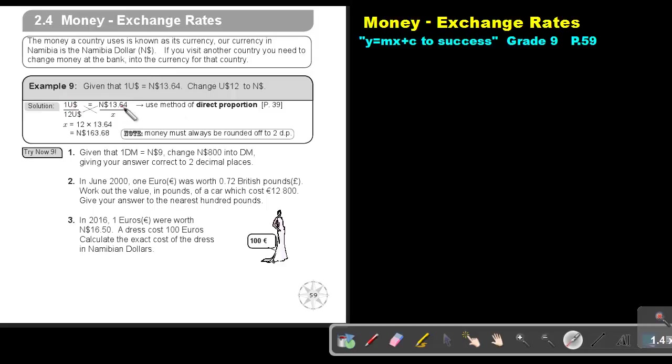So we start with the top: 1 US dollar equals 13.64 Namibian dollar. Then 12 US dollar equals X Namibian dollar. Remember that this ratio will be the same as this one. That's why there's an equal sign.